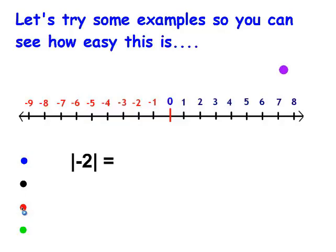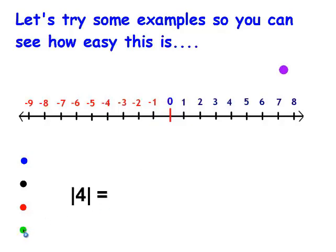What's the absolute value of negative 2? I'm going to put the pointer on negative 2. The absolute value means the distance the number is from zero. There's 1, there's 2. So the absolute value of negative 2 is 2. Now I want to know what's the absolute value of 4. I'm going to put it on 4 and count how far away it is from zero: 1, 2, 3, and 4. So the absolute value of 4 is 4.